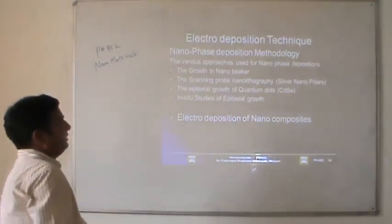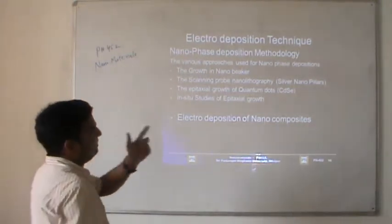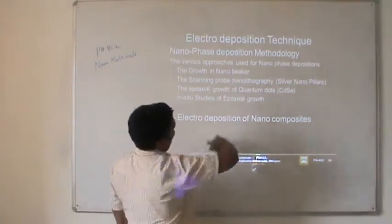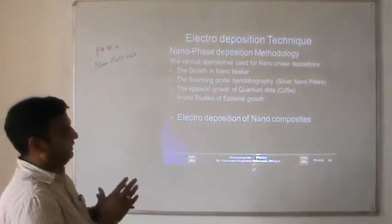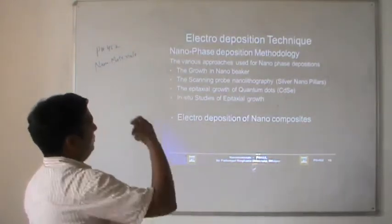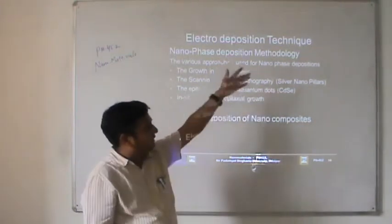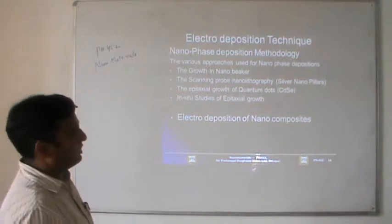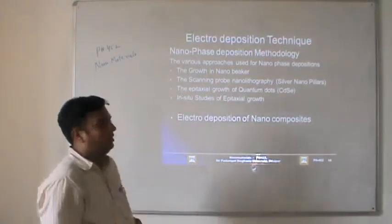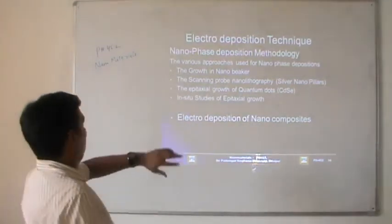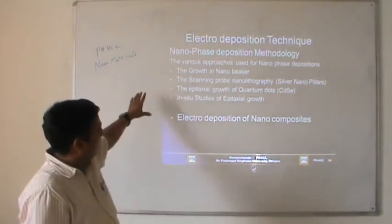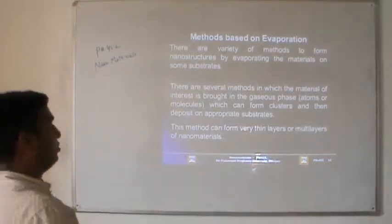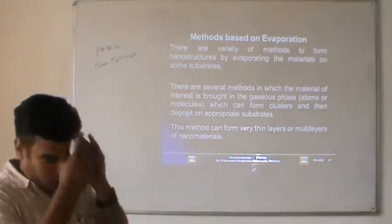Electrodeposition technique is classified into four categories. Various approaches used for nanocrystal deposition: the first is growth in nanoreactors — the whole process can be conducted in nanoreactors made of OTC glass material, where the electrode controls properties of the material. The second is scanning probe nanolithography, which can deposit silver nanopillars on electrodes. The third is the architectural growth of quantum dots — cadmium selenide is produced through this technique with in-situ studies of architectural growth on electrodes. We can also produce nanocomposites deposited on electrodes.